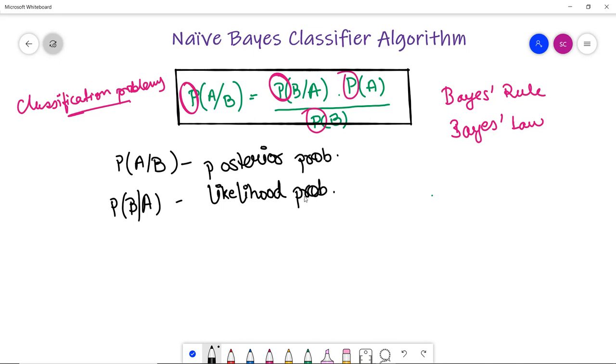If A is true, then the probability of B is this. P(A) is the prior probability, which means the probability of hypothesis before observing the evidence. And P(B) is the marginal probability - the probability of the evidence.